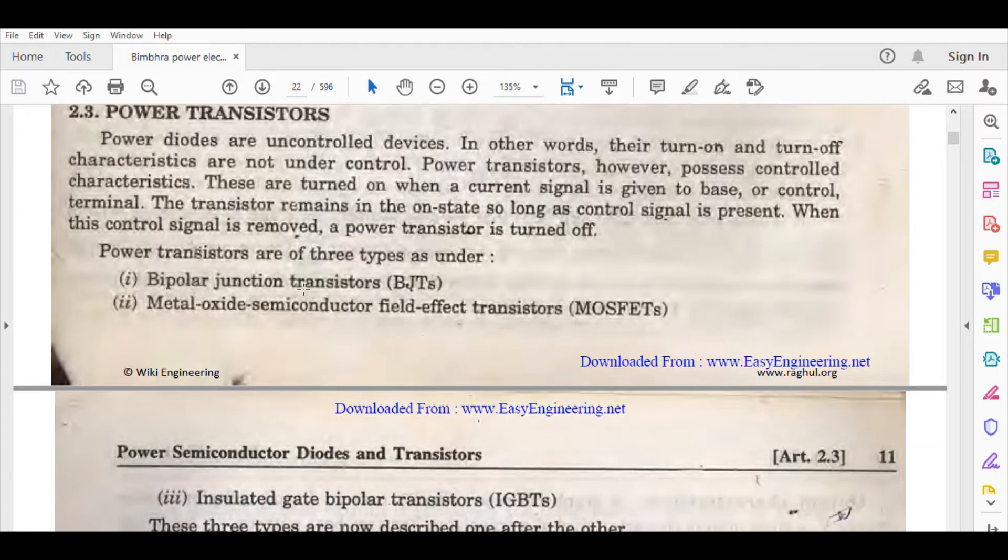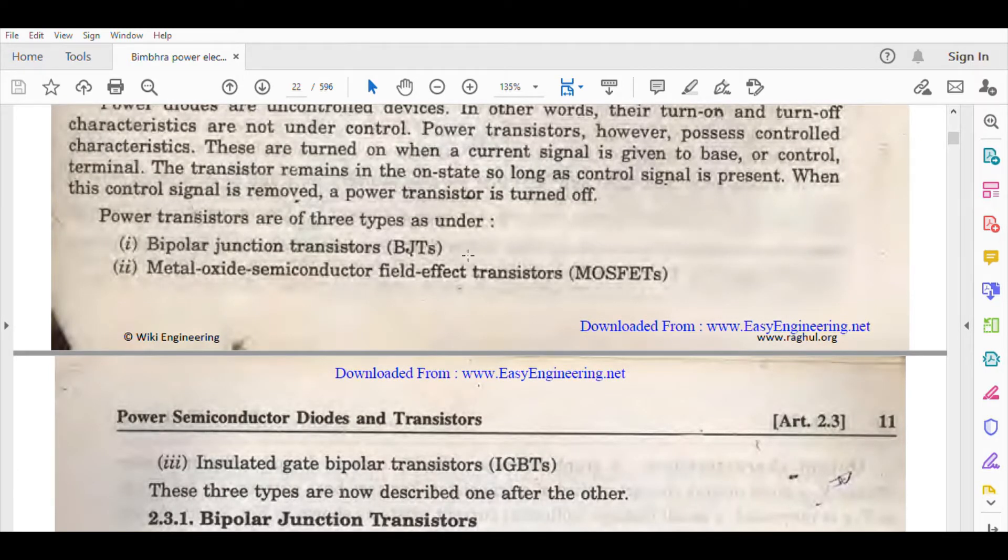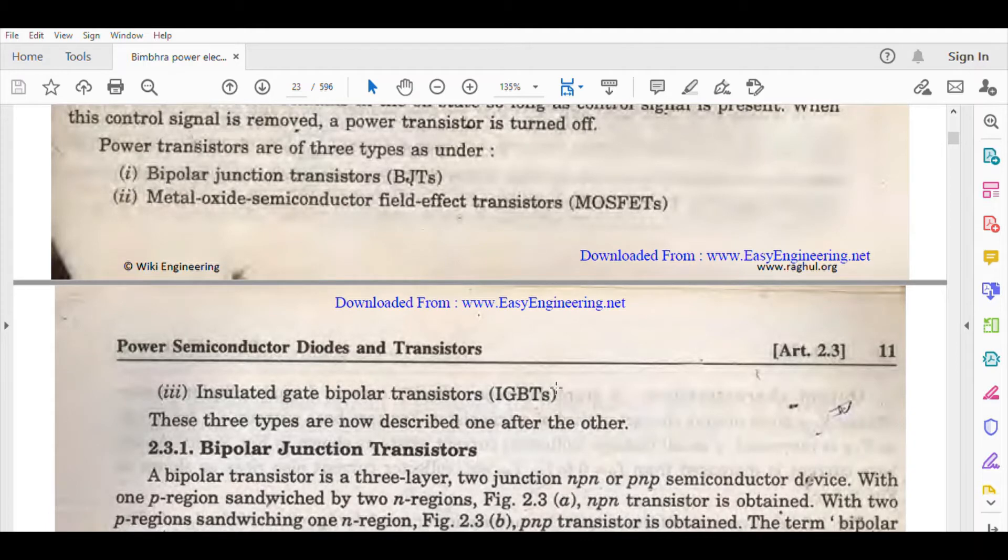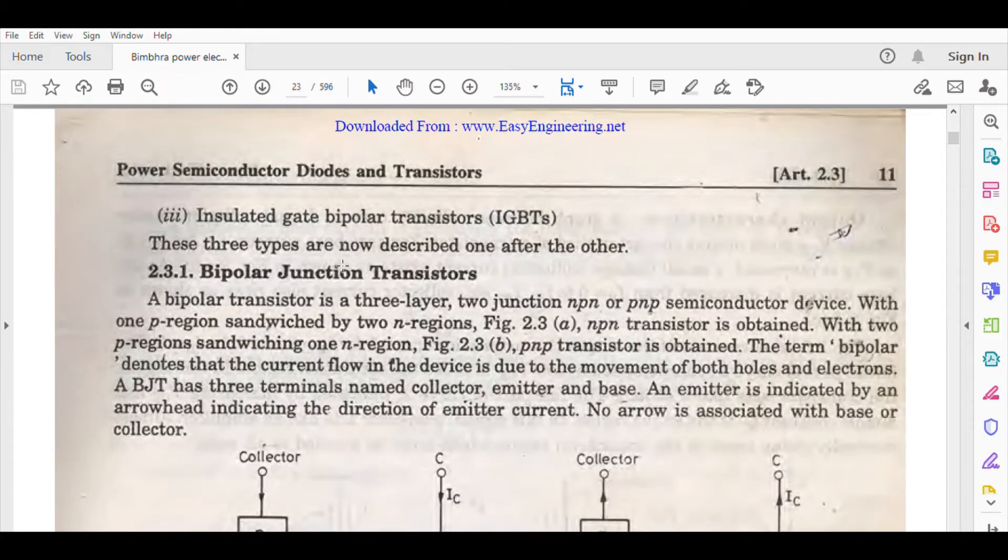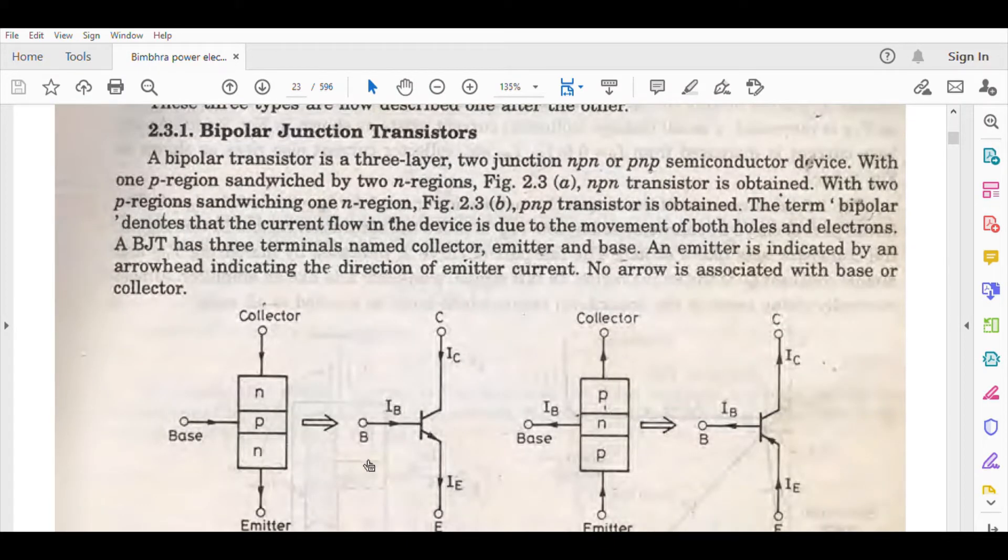Power transistors can be of three types: bipolar junction transistor, power MOSFET, and the very popular IGBT - insulated gate bipolar transistor. These are three categories we have to learn. First is your bipolar junction transistor.